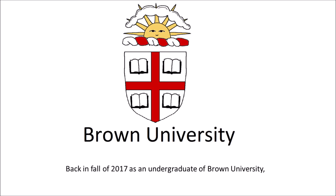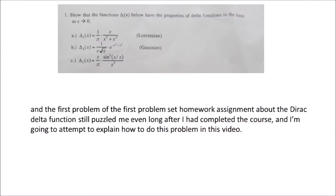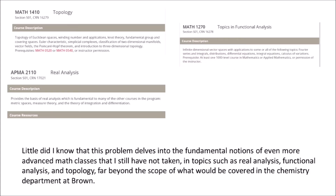Back in the fall of 2017 as an undergraduate at Brown University, I took a graduate level course in quantum chemistry, and the first problem of the first problem set about the Dirac delta function still puzzled me even long after I had completed the course. I'm going to attempt to explain how to do this problem in this video. Little did I know that this problem delves into the fundamental notions of even more advanced math classes — topics such as real analysis, functional analysis, and topology — far beyond the scope of what would be covered in the chemistry department at Brown.